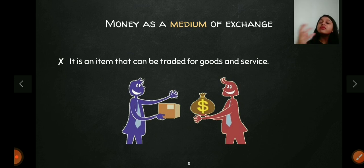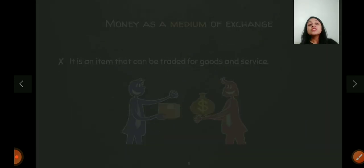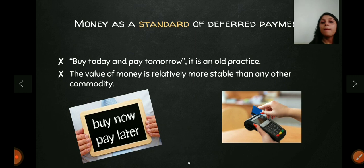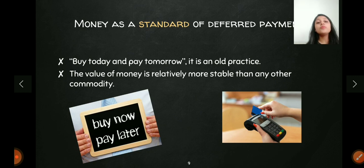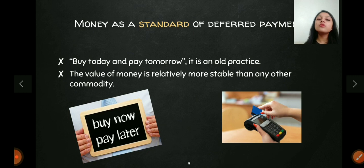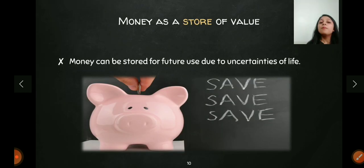The second function is money as a medium of exchange. Money is a generally accepted commodity used for exchange — you can buy almost anything with money. The third function is money as a standard for deferred payments — 'buy today, pay tomorrow.' If today I give you commodity X, how much do you need to pay later and at what interest rate? Money comes to the rescue because its value is stable compared to other commodities, making it a standard for deferred payments.